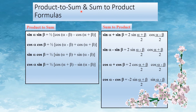Product-to-sum and sum-to-product formulas involve expressions using sin and cos of combined angles, reducing by one-half. These are the sum-to-product equations.